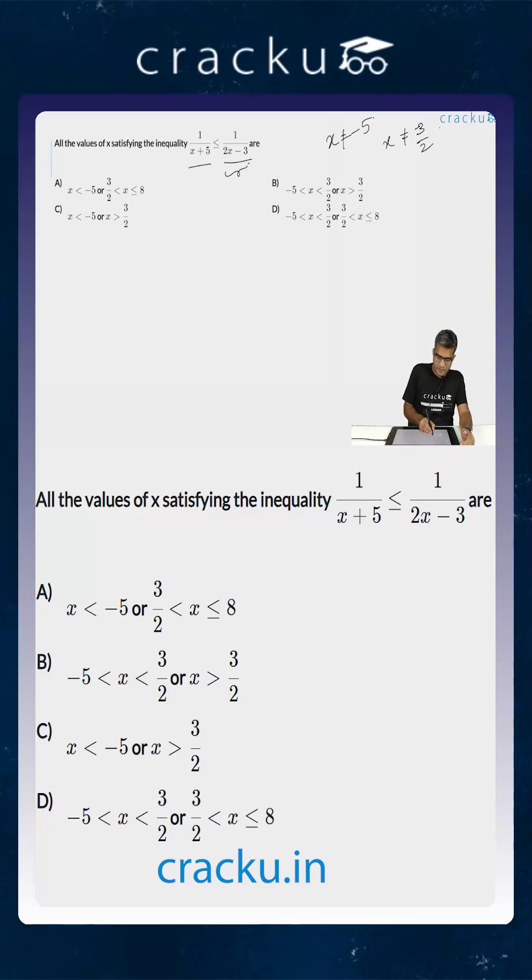Now, if you take both terms to one side: 1/(x+5) - 1/(2x-3) ≤ 0.